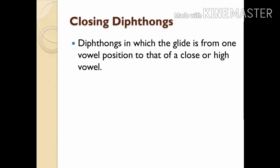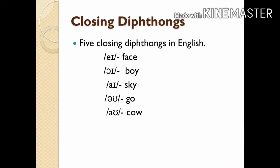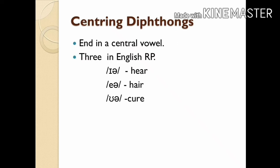The diphthongs of RP may be classified into closing diphthongs and centering diphthongs. Closing diphthongs are diphthongs in which the glide is from one vowel position to that of a close or high vowel. There are five closing diphthongs in English: /eɪ/ as in 'face,' /ɔɪ/ as in 'boy,' /aɪ/ as in 'sky,' /əʊ/ as in 'go,' and /aʊ/ as in 'cow.'